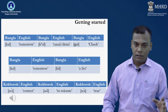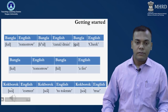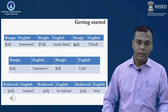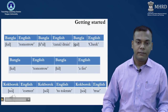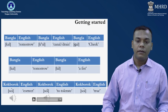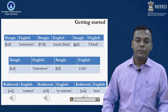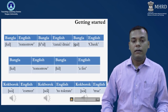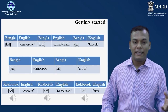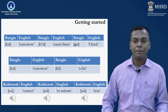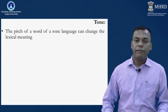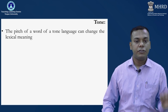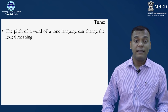In Kokborok you have three different words: soy, soy and soy — meaning 'correct,' 'to tolerate,' and 'true.' It is the exploitation of F0 that brings distinction in meaning. So what is tone? Tone is the pitch of a word in a tone language that can change the lexical meaning.